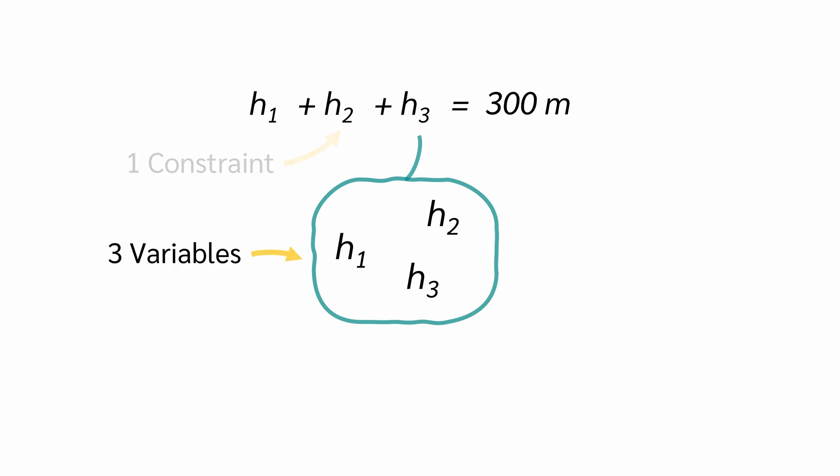With three variables and one constraint, we have 3 minus 1. So, we have two degrees of freedom.